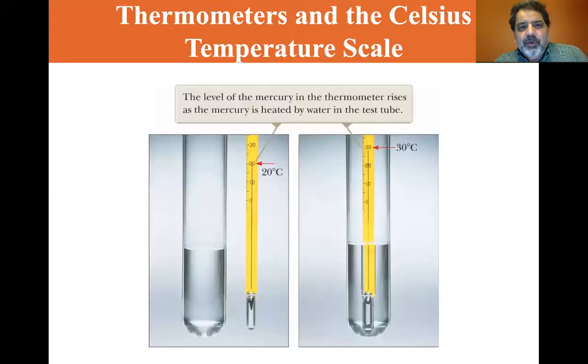We're going to continue with thermometers and the Celsius temperature scale. Now all thermometers are based on some principle, some physical property of a system that changes with the system's temperature. The volume of a liquid, such as is the case here, the mercury expands as it's warmed. The dimensions of a solid, the pressure of a gas at constant volume, the volume of a gas at constant pressure, the electric resistance of a conductor, or the color of an object.